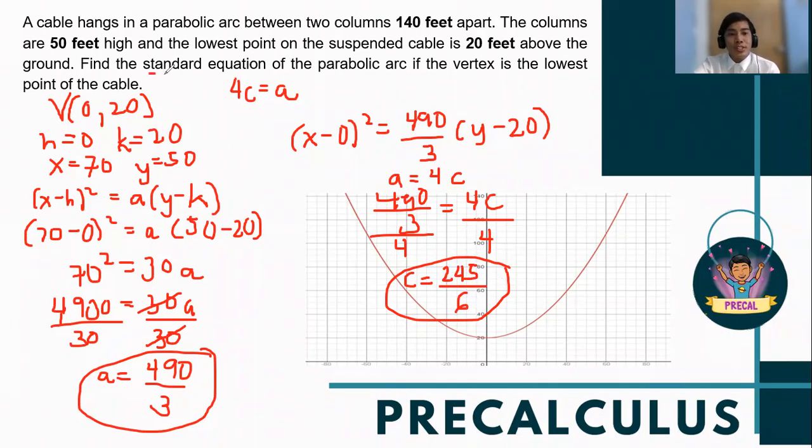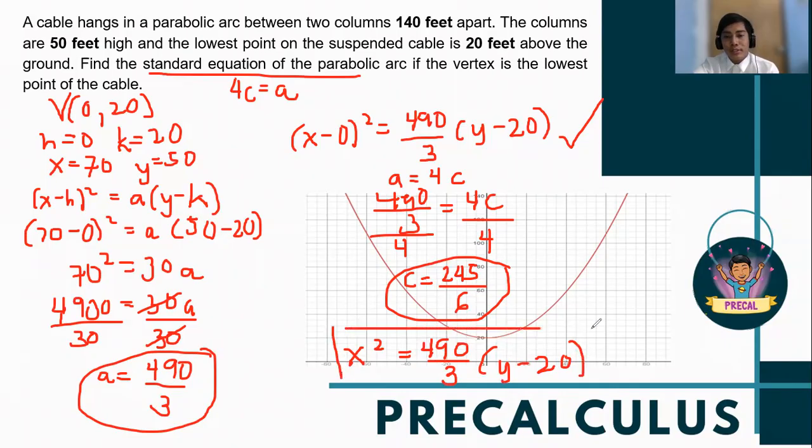But since the question is asking for the standard equation, this is enough. And still, let's simplify this more because we have x - 0 squared. So the final answer will be x² = (490/3)(y - 20). So this is what is being asked in the problem.